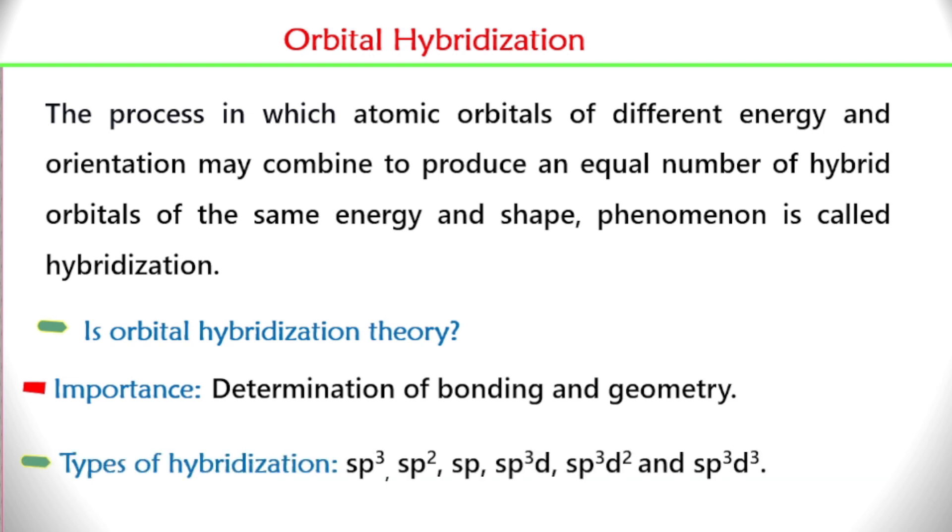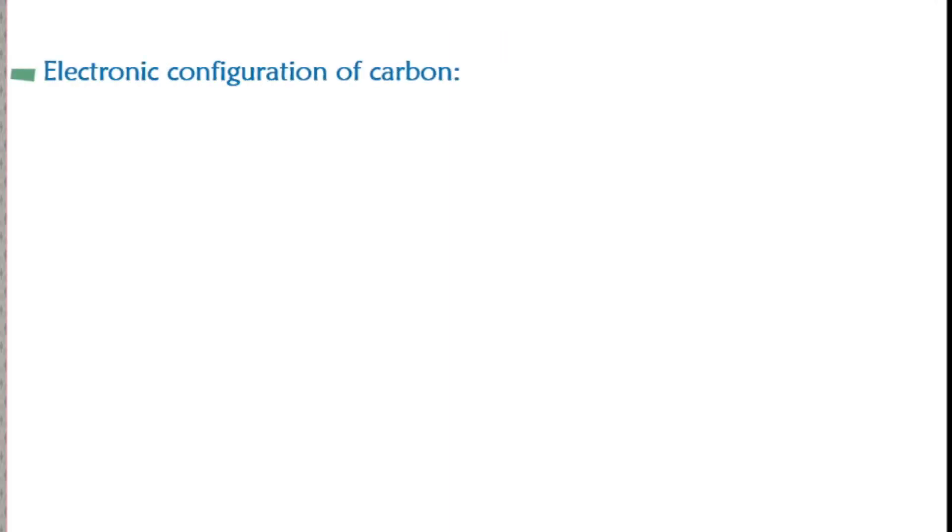Types of hybridization. There are different types of hybridization such as sp3, sp2, sp, sp3d, sp3d square, and sp3d thrice.